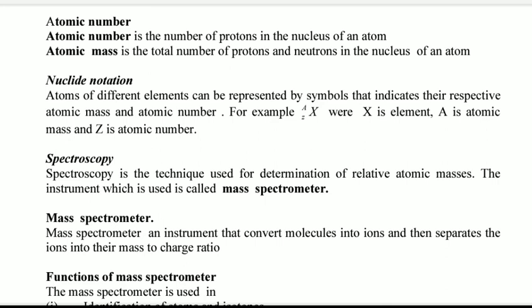Atomic number is the number of protons in the nucleus of an atom, while atomic mass is the total number of protons and neutrons in the nucleus of an atom.